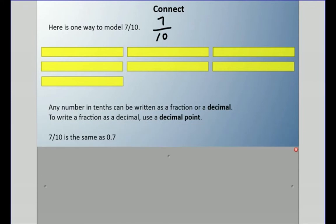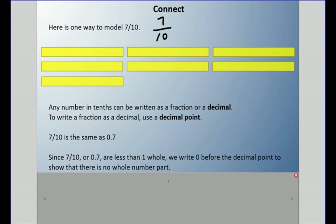7/10, written as a decimal, is the same as 0.7. Since 7/10, or 0.7, is less than one whole, we write 0 before the decimal point to show that there's no whole number part. The other reason we really do that is so we don't get confused.